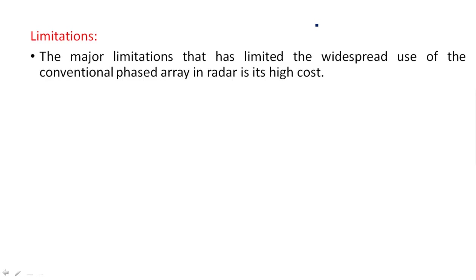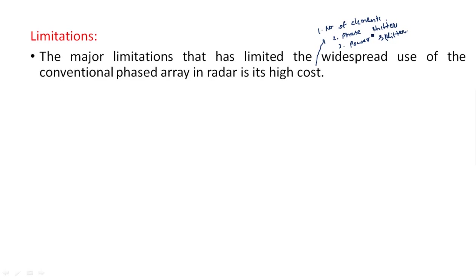Now coming to the limitations of phased array antennas. In radar systems, phased array antennas are high cost because they use a large number of elements and require a single energy source to distribute power equally to all elements using an energy splitter. The high cost comes from: first, the large number of antenna elements; second, n−1 phase shifters required for n elements; and third, a power splitter to distribute the input energy among all n elements.